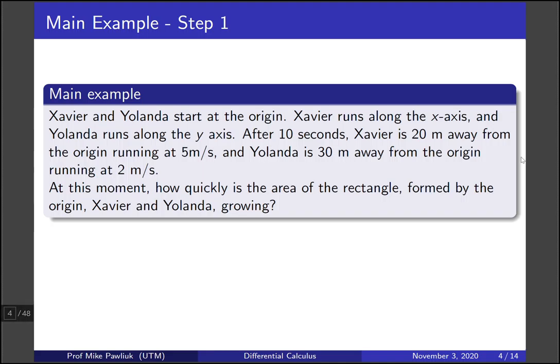Here's the main example that we're going to use throughout this video. Xavier and Yolanda start at the origin. Xavier runs along the x-axis, and Yolanda runs along the y-axis. After 10 seconds, Xavier is 20 meters away from the origin running at 5 meters per second, and Yolanda is 30 meters away from the origin running at 2 meters per second. At this moment, how quickly is the area of the rectangle, formed by the origin Xavier and Yolanda, growing?